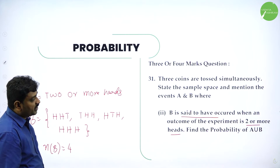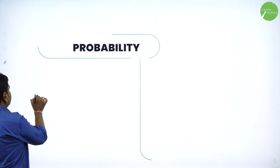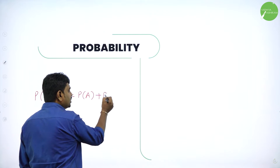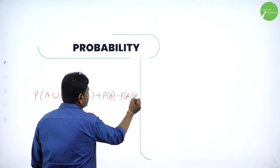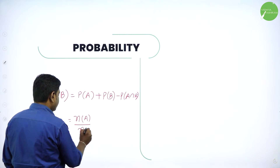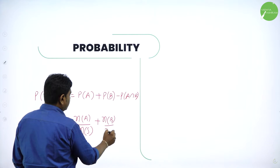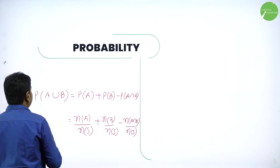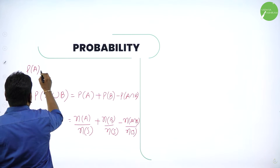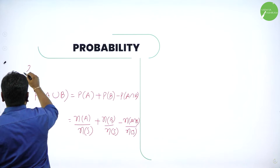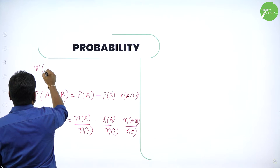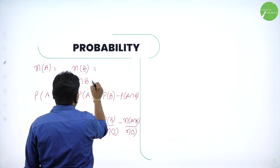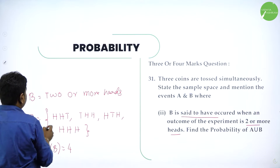So now what do they want? Find the probability of A union B. P of A union B, using the cardinal number relation: P(A∪B) = P(A) + P(B) − P(A∩B). What is P(A)? N of A divided by N of S. What is P(B)? N of B divided by N of S. What is P(A∩B)? N of A∩B divided by N of S. So now we will write all the values. Number of elements in A is 3, number of elements in B is 4.